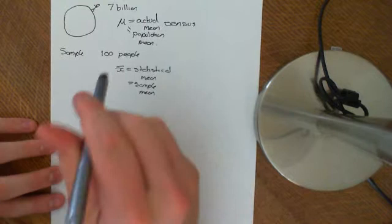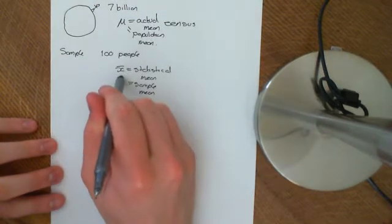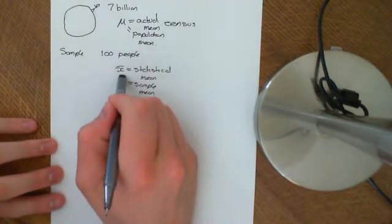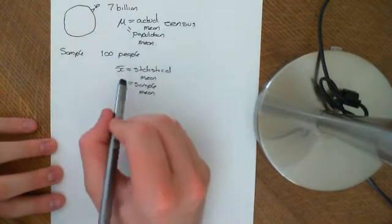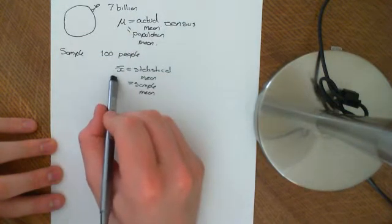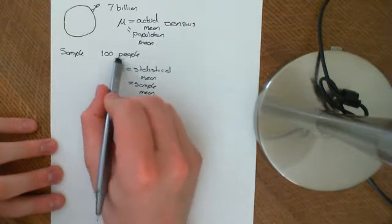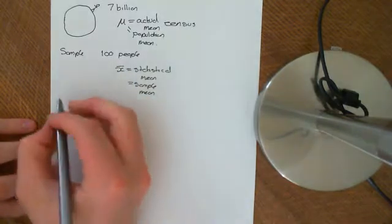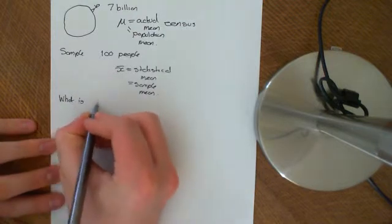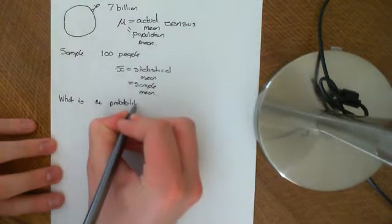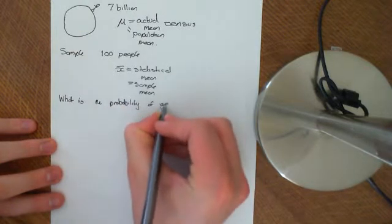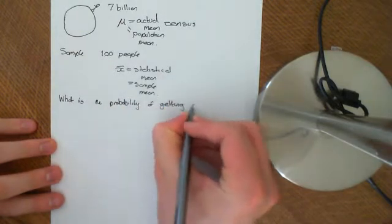So basically, what we want to know is, what is the distribution of this sample mean? We would like to know, how likely is it that our sample mean is actually close to our mu? So we want to know, what is the probability of getting a certain value for x bar? So we want to know, what is the probability of getting a certain value for the sample mean?